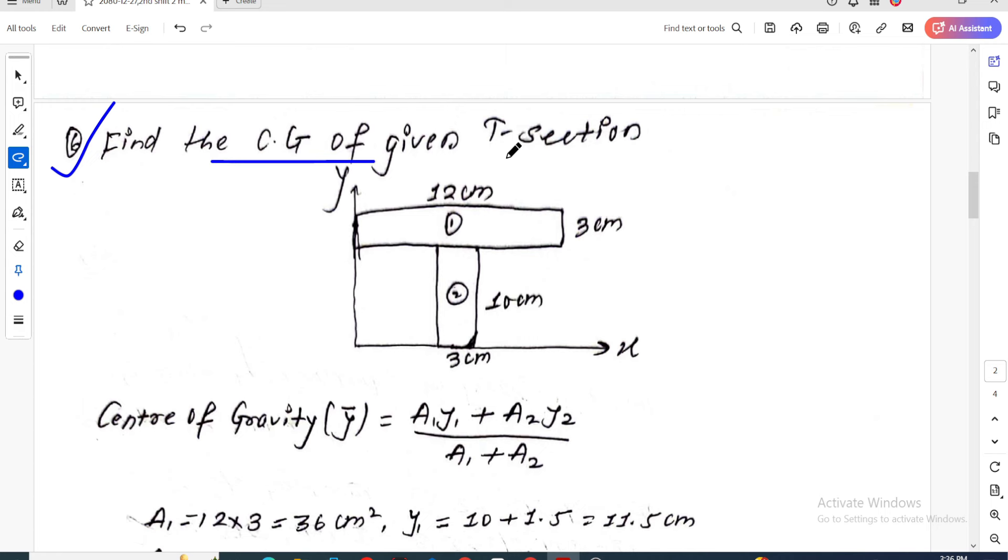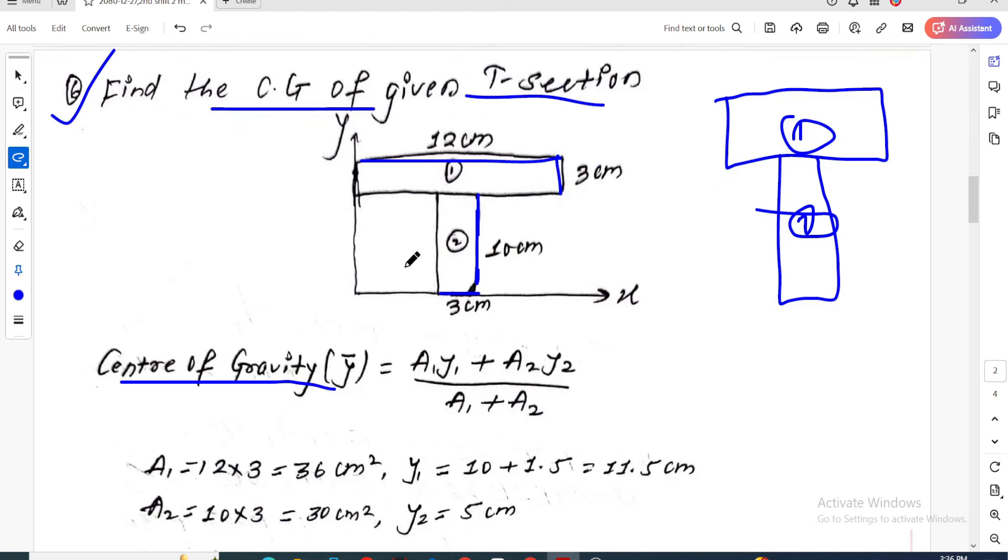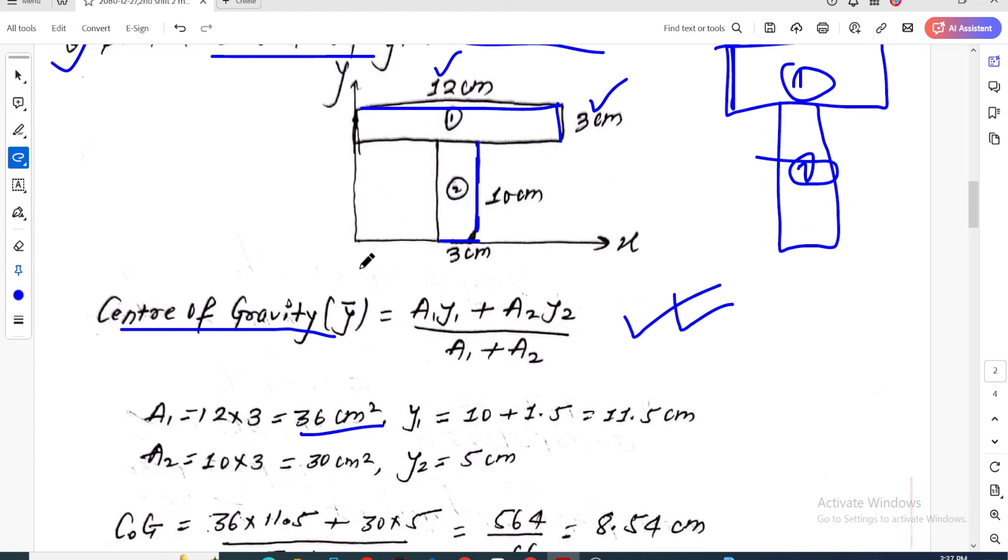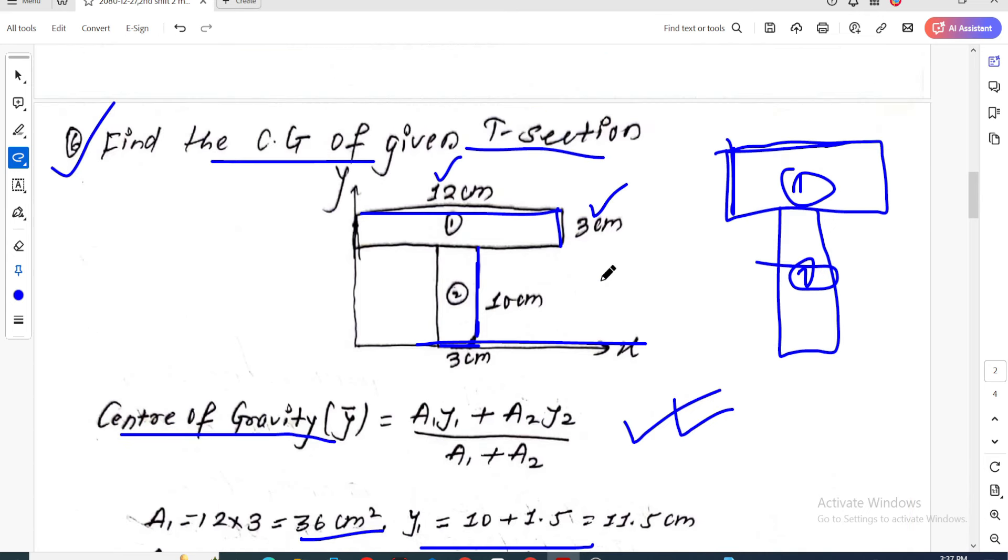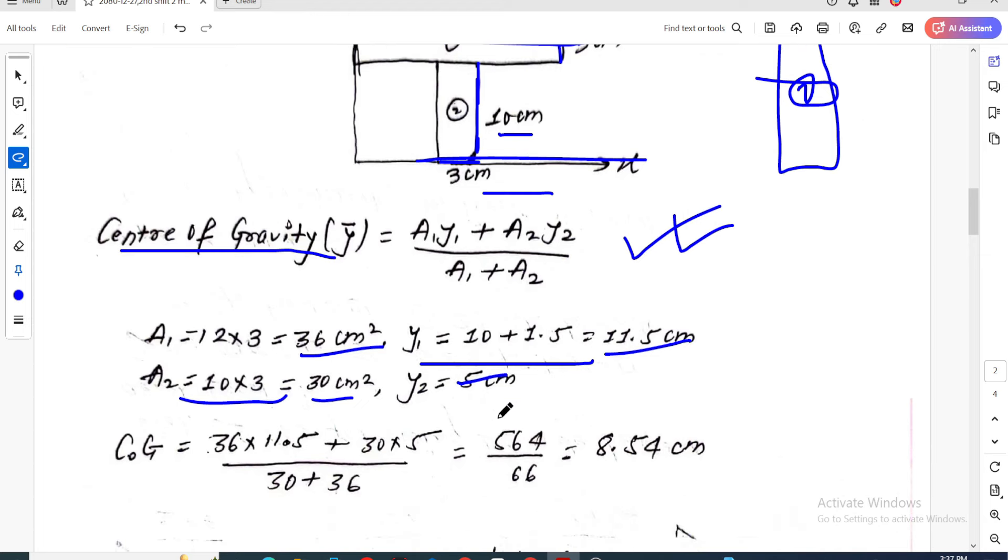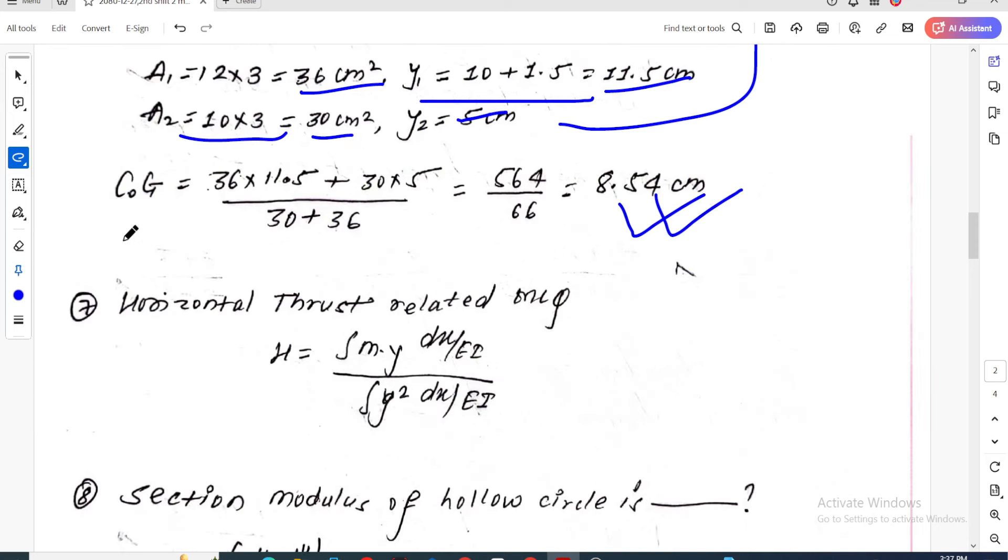Question five is about finding center of gravity for a T-section. The formula is A1 times y1 plus A2 times y2 divided by A1 plus A2. For the rectangular section, A1 equals 2 cm times 3 cm equals 6 cm². Y1 is 10 plus 1.5 equals 11.5 cm. A2 is 10 times 3 equals 30 cm². Y2 is half of 10, which is 5 cm. Putting these values, the final answer is 8.54 cm.